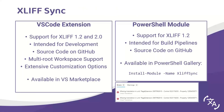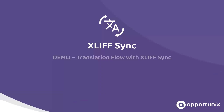Before we continue with the demo, there's one more thing. XLift Sync is available as a VS Code extension but also as a PowerShell module. Both are open-sourced, available on GitHub, and not only targeted at Business Central extensions but also for other target areas. You can use the PowerShell module to catch translation errors in your build pipelines and throw an error or warning in Azure DevOps pipelines.